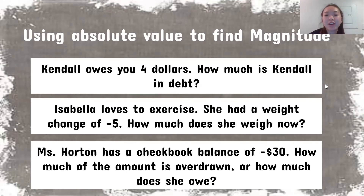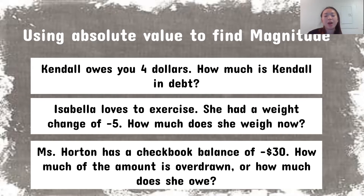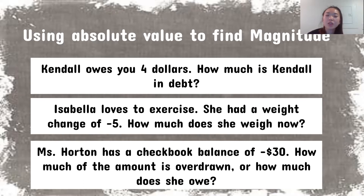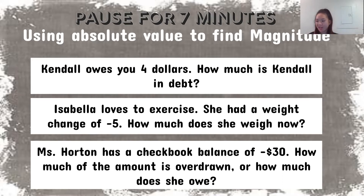Stop here for about five to seven minutes and try these on your own using the number line. First: Kendall owes you four dollars — how much is Kendall in debt? Second: Isabella loves to exercise and has a weight change of negative five — how much is the change in her weight? Third: Miss Horton has a checkbook balance of negative thirty dollars — how much of the amount is overdrawn, or how much does she owe?